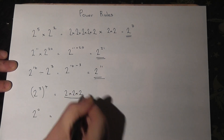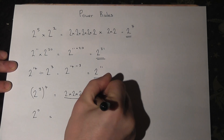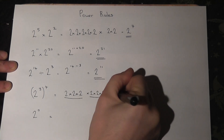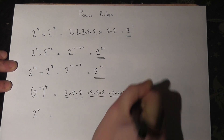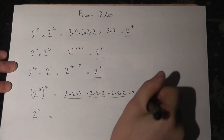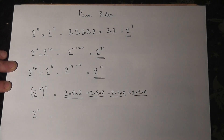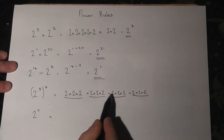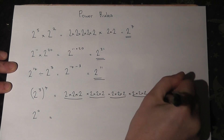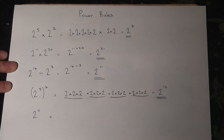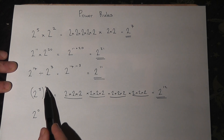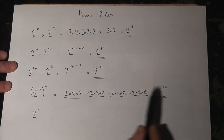So we have 4 occurrences of 2 times 2 times 2, giving us twelve 2s multiplied together. That's just 2 to the power of 12. The shortcut here is to observe that the 3 has occurred 4 times, and 3 times 4 is 12.